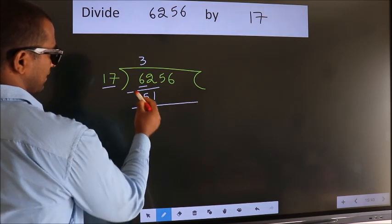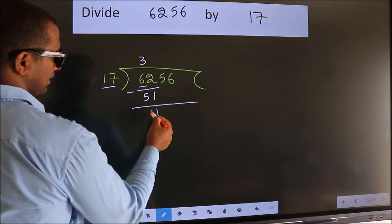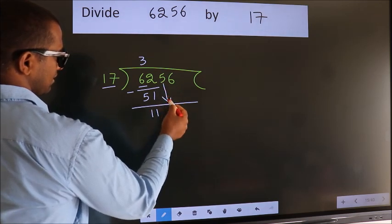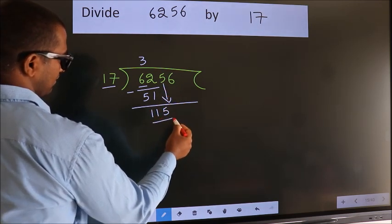Now we should subtract. We get 11. After this, bring down the beside number, so 5 down. So 115.